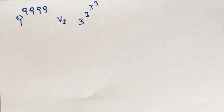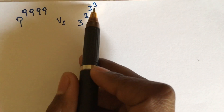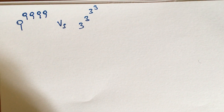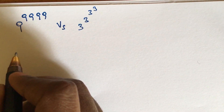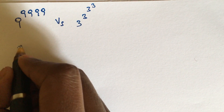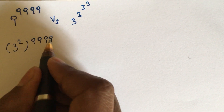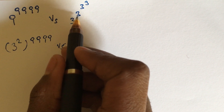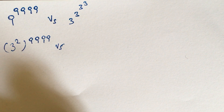Which number is bigger: 9 to the power of 9^9^9, versus 3 to the power of 3 to the power of 3 to the power of 3? Here we have to solve this step by step. We solve the last two parts first.